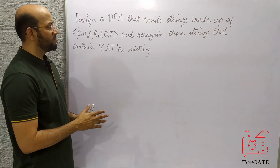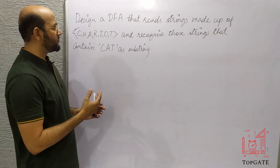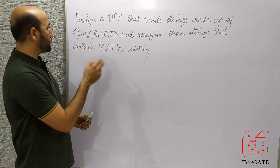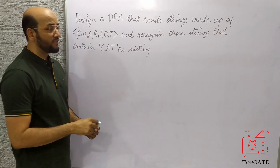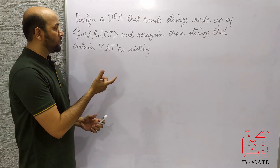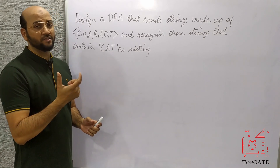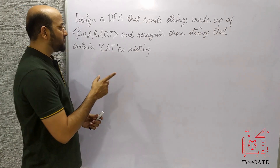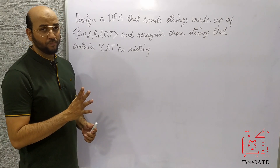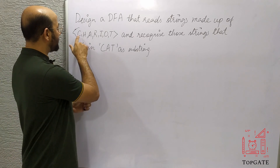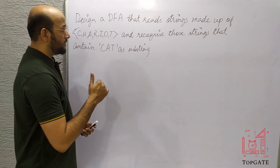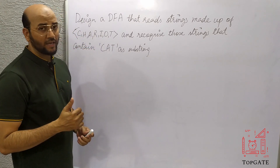This is slightly different from the previous examples because we are taking more than two alphabets — we have seven alphabets in total. In this DFA, we need to accept only those strings which contain 'cat' as a substring, and from every state I should have a path for each of C, H, A, R, I, O, T — exactly seven paths from every state.